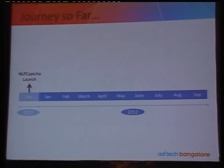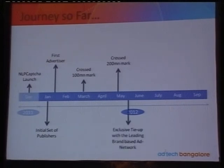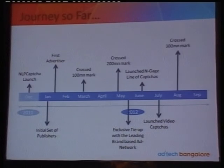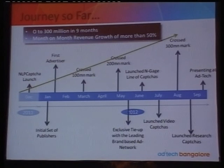Let me summarize our journey so far. December 2011: NLP CAPTCHA launched. It was a typical chicken-and-egg situation — whether to get a publisher or an advertiser first — but we solved it in mid-January when we got the first set of publishers, and towards end of January, our first advertisers. March: we crossed 100 million. May: we crossed 200 million. End of May: we tied up with the leading brand-based ad network in the country. June: we launched the engaged line of CAPTCHAs. July: video CAPTCHAs. August: we crossed 300 million and launched research CAPTCHAs. The growth has been from 0 to 300 million in nine months, and our revenues are growing at more than 50% month on month.